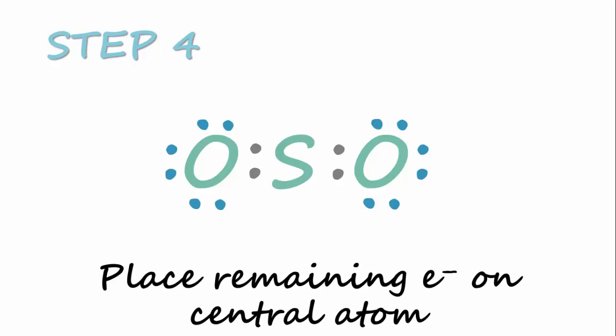Step 4, place any remaining electrons on the central atom. Since we're working with 18 electrons, we have already used up 16. So therefore, we have two more electrons left, and we're going to place that on the sulfur.